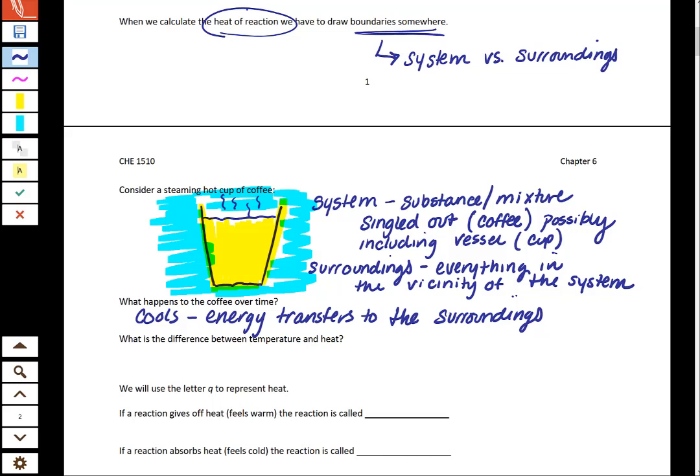Let's talk real quick about the difference between temperature and heat. Temperature is a measure of kinetic energy. Kinetic energy is the energy of movement. So temperature is describing how quickly the molecules are moving.